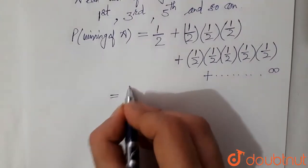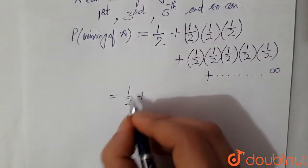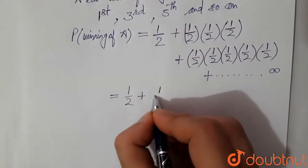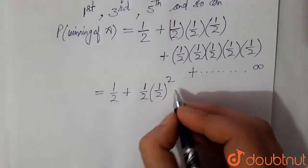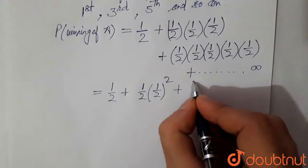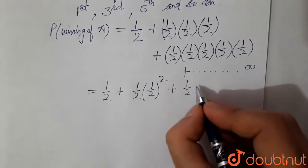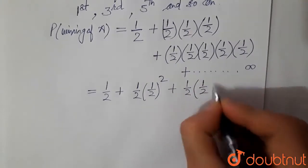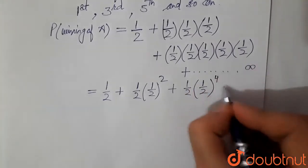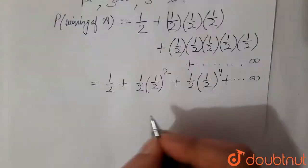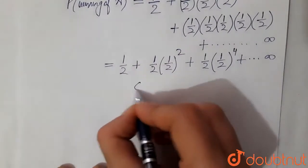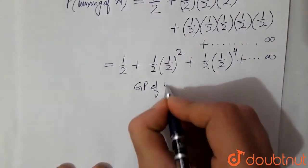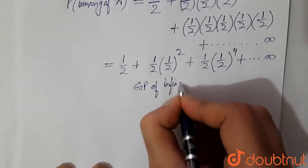Now, if you see here, this series is like this: 1 by 2 plus 1 by 2 into 1 by 2 whole square plus 1 by 2 into 1 by 2 to the power 4 plus infinity. So this is a GP of infinite terms.